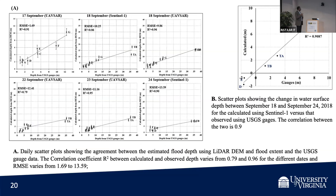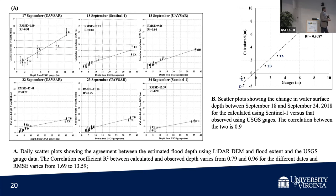The proof of the pudding is in the comparison. For these gauges on different days, we get very good R-squared values and low RMSEs. The best part is the difference between September 18th and September 24th, 2018 — you can see the difference in water surface depth or elevation. It almost falls on a straight line: R-squared of 0.99. I don't think machine learning could do better.